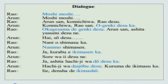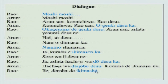So a simple conversation between Rao-san and Arun-san on the phone. Moshi moshi, Arun-san konnichiwa. The new phrase is o genki desu ka — are you in good health? Okage-sama de genki desu means thank you, I am alright. Arun-san, ashita yasumi desu ne — tomorrow is a holiday. Hai, so desu. Nani wo shimasu ka — what are you going to do? Nani mo shimasen — nothing. Jaa kurabu e ikimasen ka — let's go to the club. Sore wa ii desu ne — that is really nice. Ashita hachi ji wa dou desu ka — how about tomorrow at 8 o'clock? Hachi ji wa daijobu desu — it is alright at 8 o'clock. Kuruma de ikimasu ka — are we going by car? No, let's take the train.